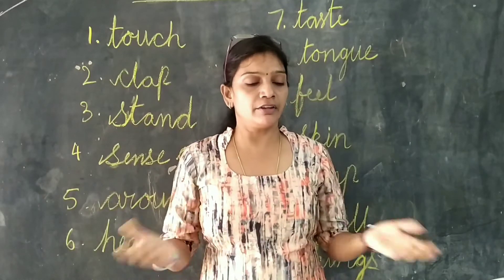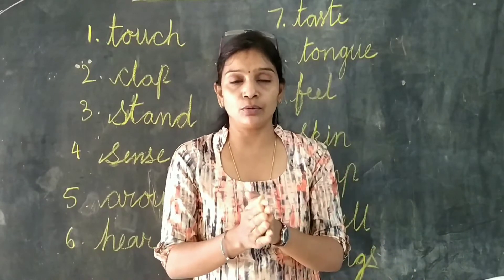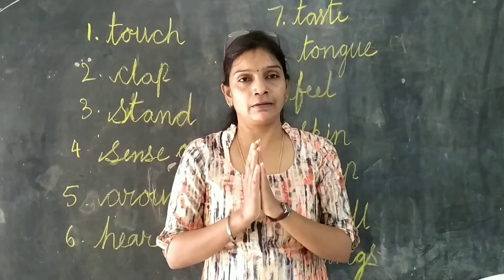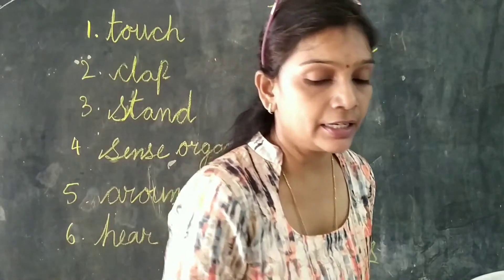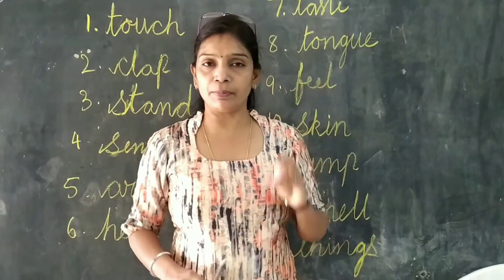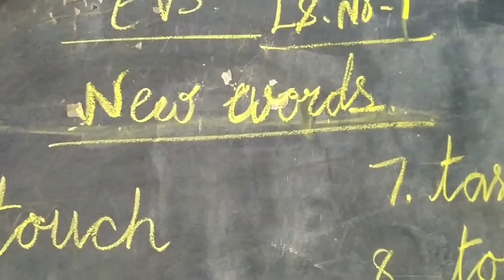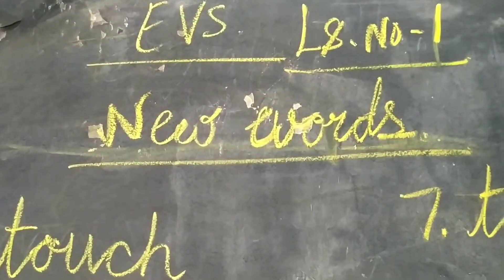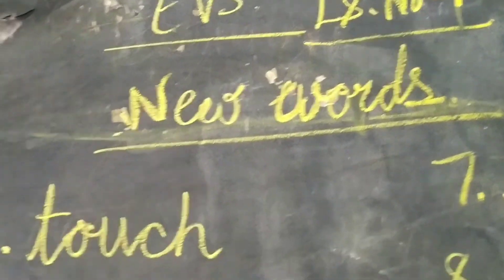We have learned about the different parts in our body and how they are helping us. Today we are going to learn new words in this lesson. So everybody, be ready — get your pencil, eraser, and notebook, children. We will learn new words. Look at the board everyone. This is AES Lesson number 1, new words.